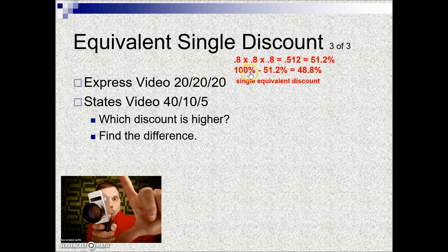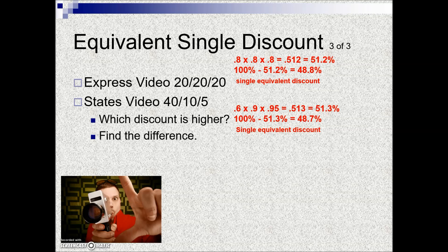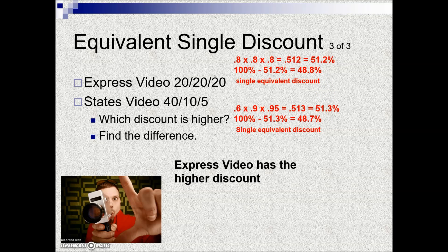The savings is found by taking 100% minus that percentage. So the equivalent single discount for Express Video is 48.8%. For States Video: the complement of 40% is 60%, complement of 10% is 90%, and complement of 5% is also 95%. Multiplying those three complements gives the net cost percentage, and 100% minus that leaves a single equivalent discount of 48.7%. Express Video wins out by a tenth of 1%.